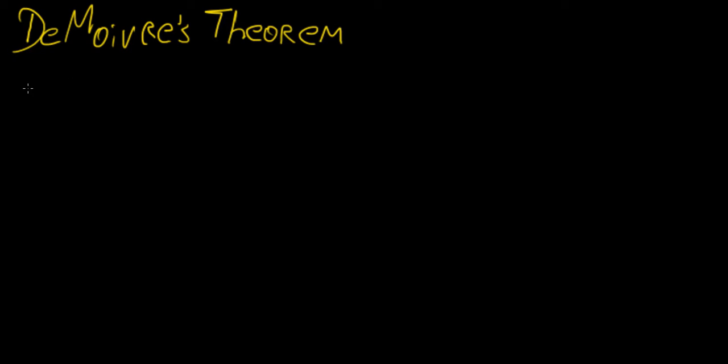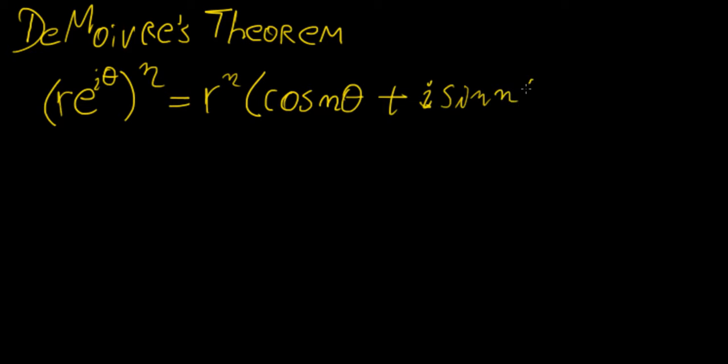Basically what it tells us is that if you are taking the power of a particular complex number, we're going to express it in polar form: r e to the power of i theta to the power of n. This is the same as r to the n times cosine n theta plus i sine n theta.